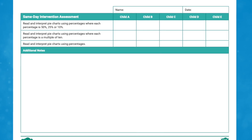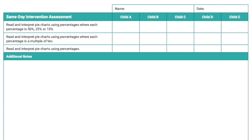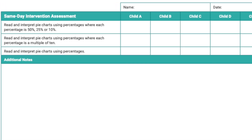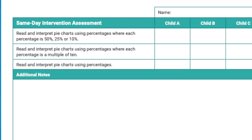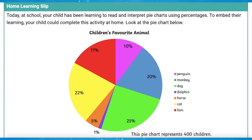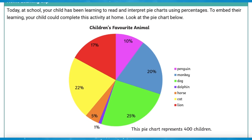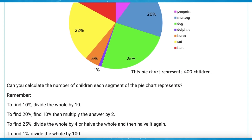The feedback sheet provided allows the adult leading the session to take notes throughout and record whether children have understood the learning objectives. Finally, a home learning slip can be sent home with the students to consolidate their in-school learning.